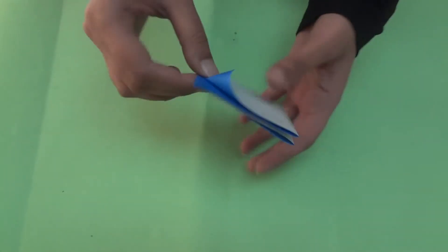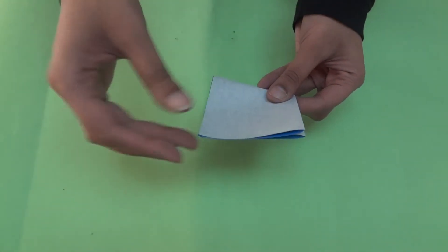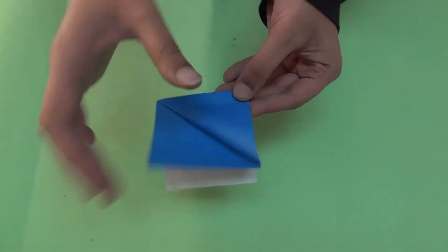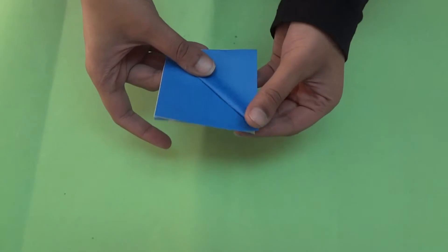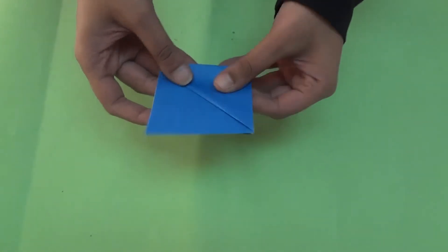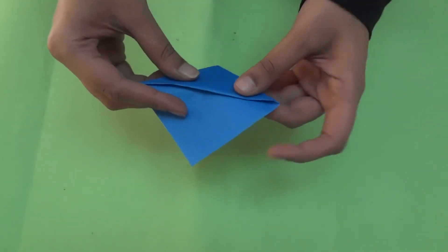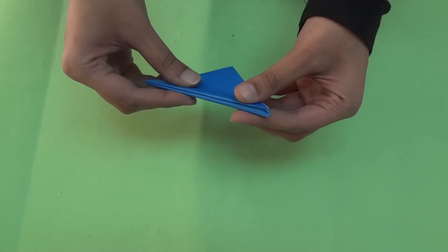Now, see this corner. There are four flaps. One flap will go this side. And the other three flaps will go the other side. Like this.